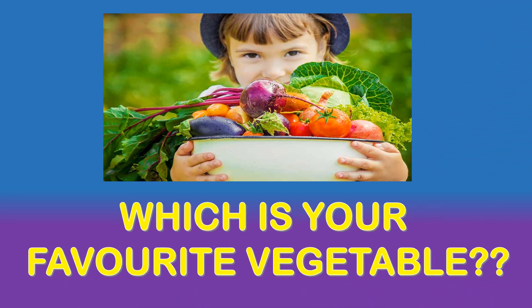So kids, today we have learnt various vegetables in different colors: white, purple, yellow, red, orange and green. So which is your favorite vegetable?